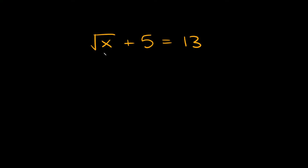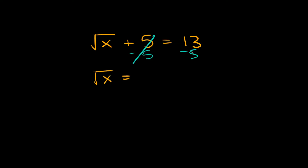So here we have the square root of x plus 5 is equal to 13. You always want to leave the square root for the very end. So the first thing we're going to do is subtract 5 from both sides. These cancel out, so then we're just left with the square root of x is equal to 13 minus 5, which is equal to 8.